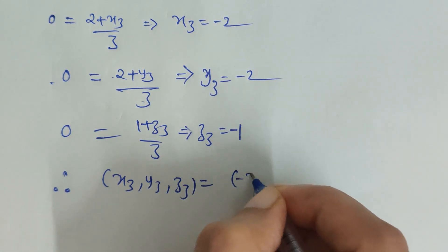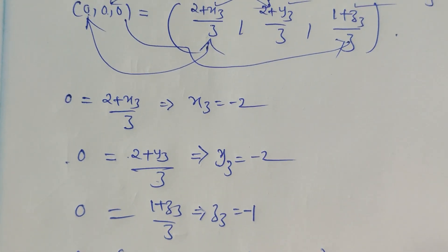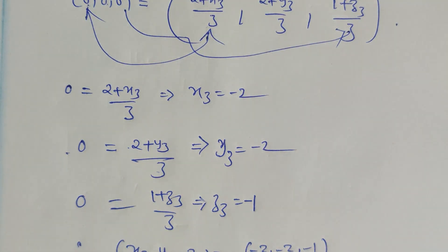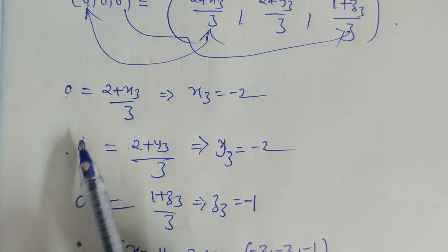So this is how we calculate any of the vertices when the remaining information is available with us. Like here we were given the centroid, so each coordinate has been compared with the respective coordinates on the right hand side.